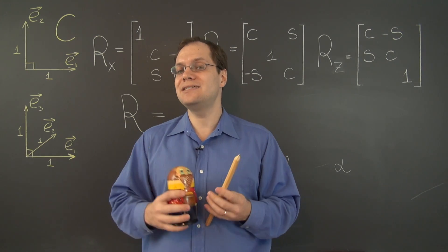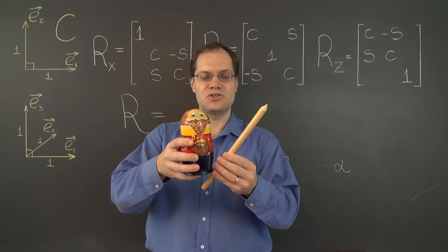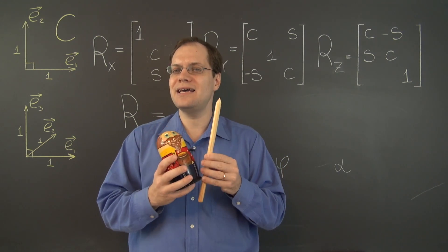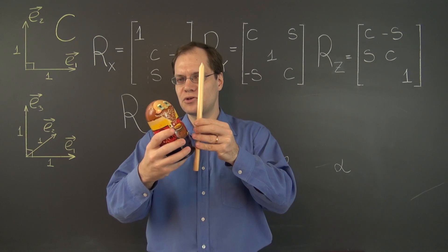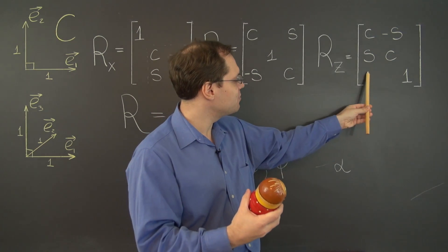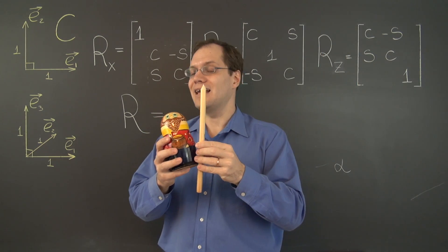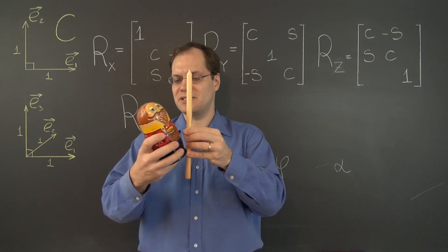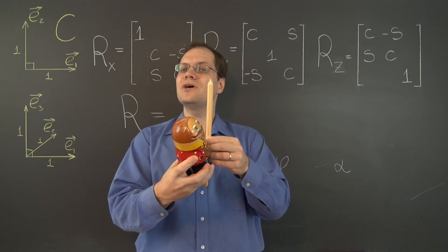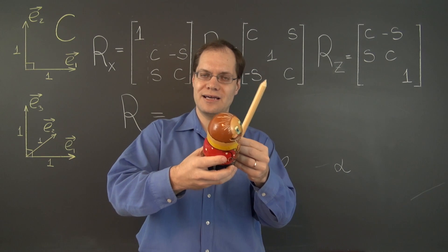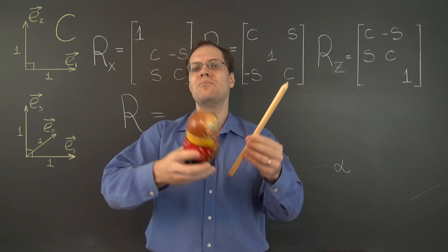But here's the idea. The idea is to move this axis so it's aligned with the z-axis. Then perform the rotation, which can be done with the help of this matrix because it's an elementary rotation with respect to the z-axis. And once that rotation is done, bring the axis back. So it's three big steps.